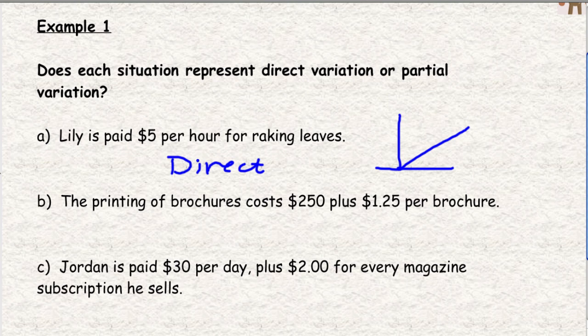What about B, the printing of brochures costs $250 plus $1.25 per brochure. $1.25 per brochure, that is the rate. And the $250 is the initial value. That's what the printing costs start out. So that means that line, if we were going to graph that line, it would start up at $250. It has to start higher. So this is partial. Partial variation.